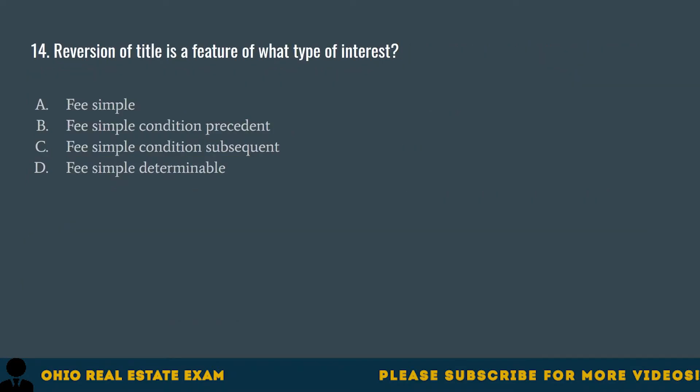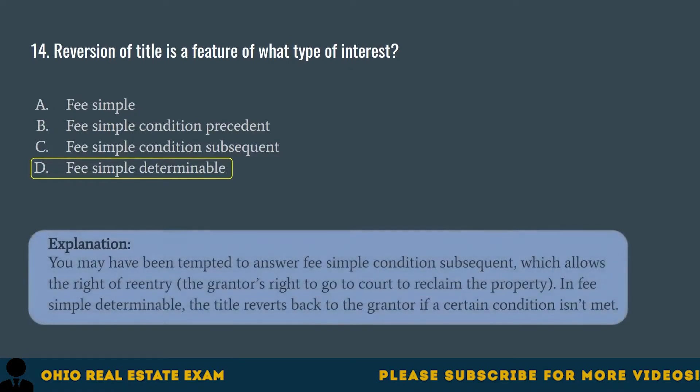Question 14. Reversion of title is a feature of what type of interest? A. Fee simple. B. Fee simple condition precedent. C. Fee simple condition subsequent. D. Fee simple determinable. The correct answer is D. Fee simple determinable. You may have been tempted to answer fee simple condition subsequent, which allows the right of re-entry — the grantor's right to go to court to reclaim the property. In fee simple determinable, the title reverts back to the grantor if a certain condition isn't met.